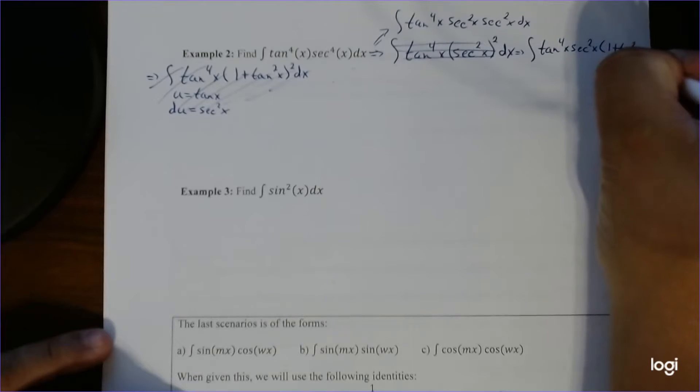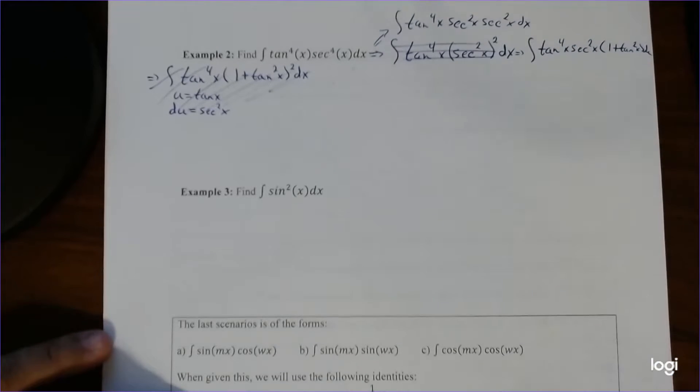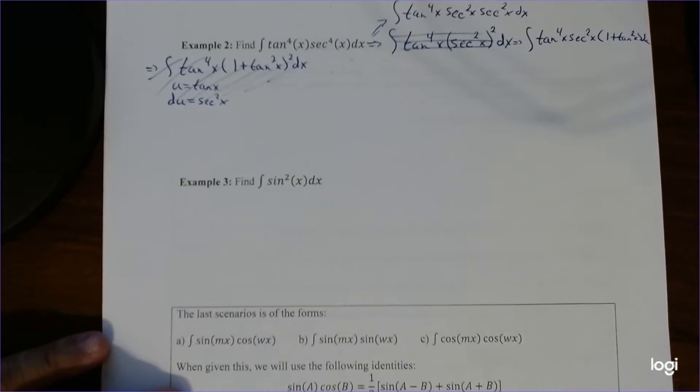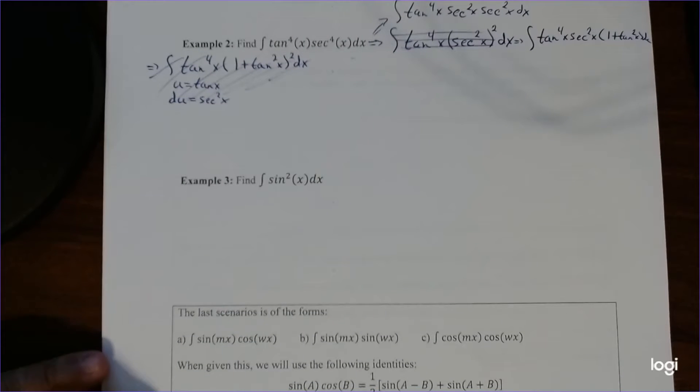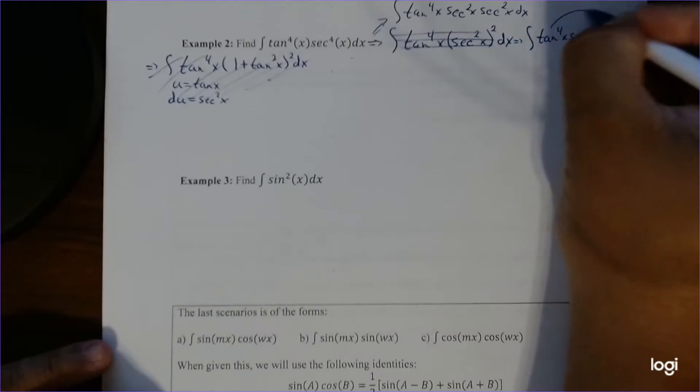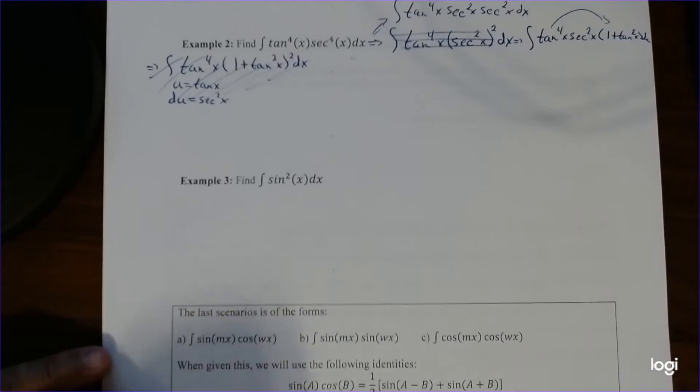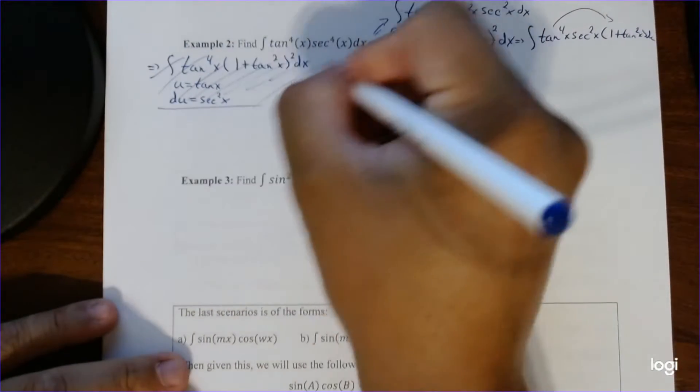plus tangent squared x. Now notice it's kind of the same situation we had in the last example. So we're just going to distribute just the tangent inside the portions. Let's press this off.